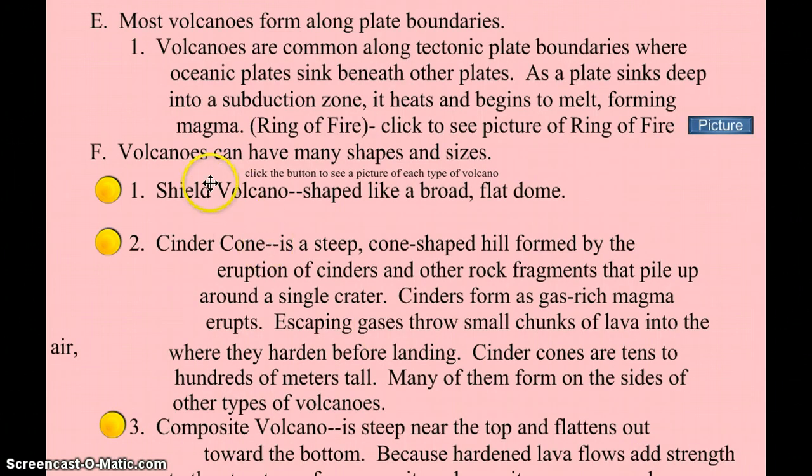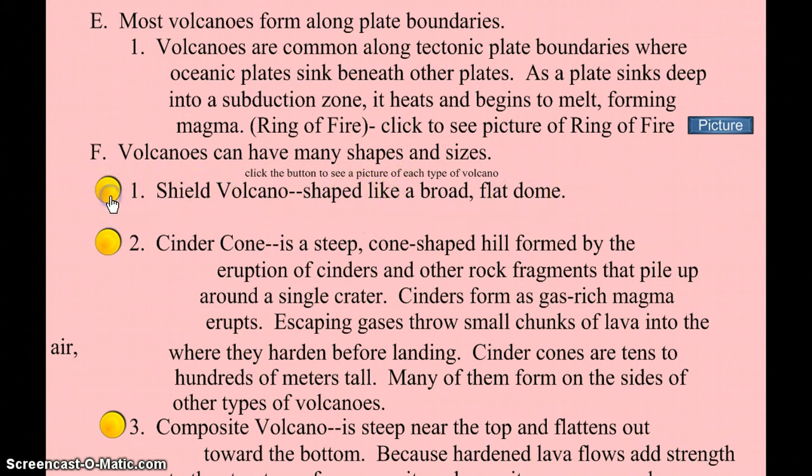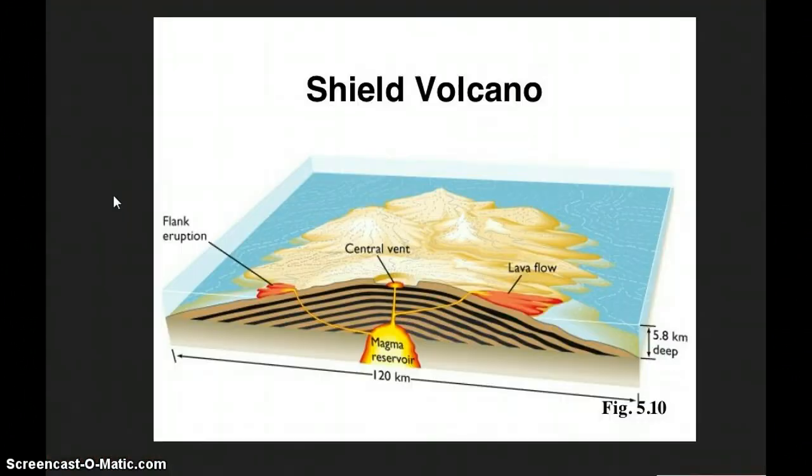But when they do make volcanoes, there's different kinds. There's a shield volcano. Those are broad. They're wider and they're flatter. And this is kind of an example that you would see with a shield volcano. You notice there's eruptions off to the sides. The central vent's in the middle, but it's not really tall, but it's really wide.